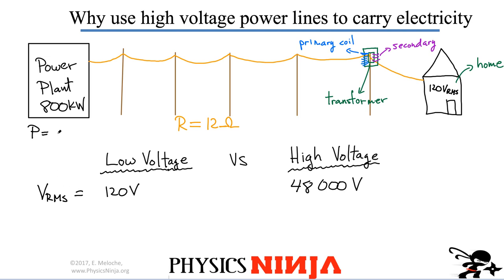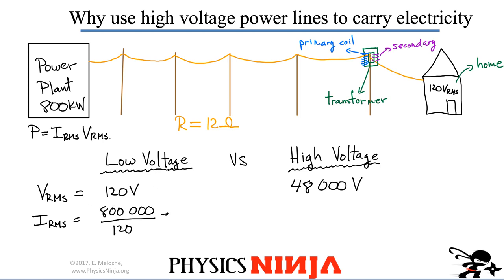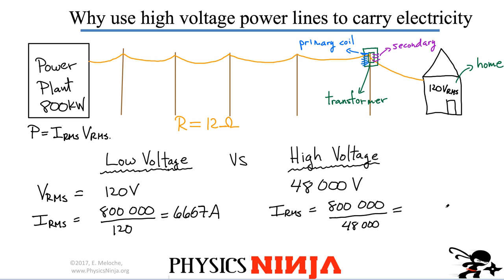We know that power equals RMS current multiplied by RMS voltage. So the RMS current is simply the power — 800 kilowatts — divided by the RMS voltage. For the low voltage case, dividing by 120 gives 6,667 amps. That's a lot of current. In the high voltage case, the RMS current is again 800,000 watts divided by the high voltage of 48,000 volts, giving only 17 amps — much smaller.